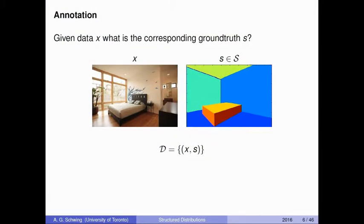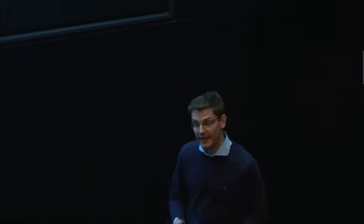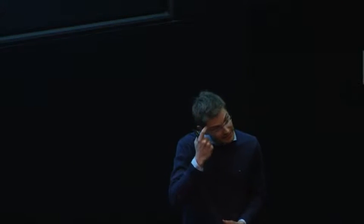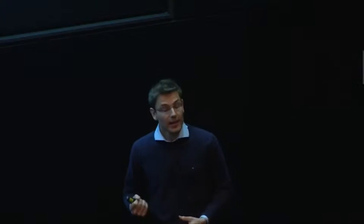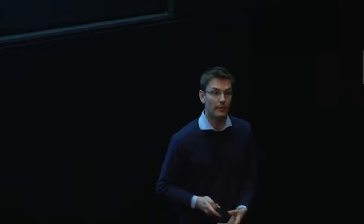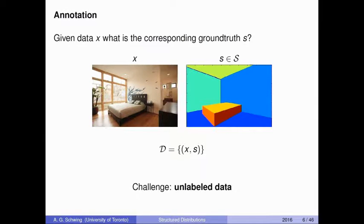When annotating data X, we're interested in assigning a ground truth S from the set of all possible output space objects, calligraphic S, that best describes the observed scene. Suppose we are given as input data X an image, and we're interested in finding the faces of the walls as well as an object. A possible ground truth for this task is shown on the right-hand side. It took quite a while to come up with this picture, and importantly, we spent all this time only to create dataset D, which contains pairs of input data X and corresponding ground truth S. Going forward, we want to spend less time on this. One important challenge is how do we better extract information from unlabeled or weakly labeled data.